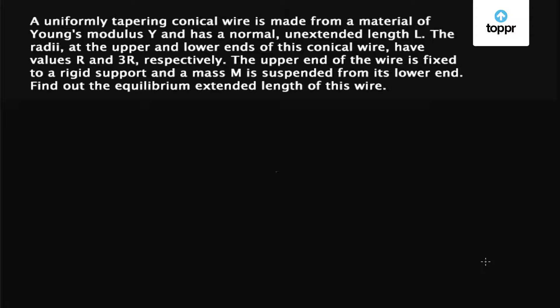The radii at the upper and lower ends of this conical wire have values R and 3R respectively. The upper end of the wire is fixed to a rigid support and a mass M is suspended from its lower end.